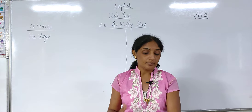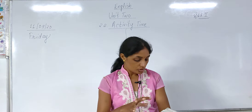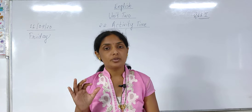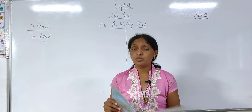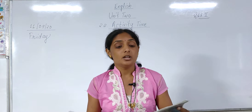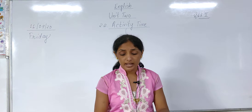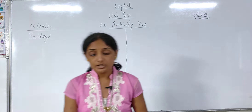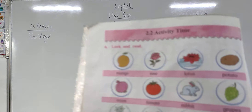In Activity Time, it is told to look and read. There are some pictures on page number 18. You have to open your page number 18 of your English Bal Bharati book. In 2.2 Activity Time, it is told to look and read — you have to look and read.